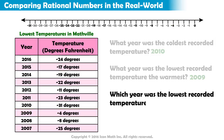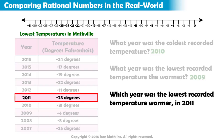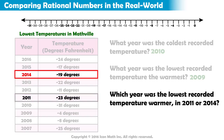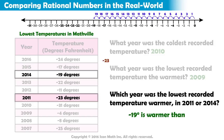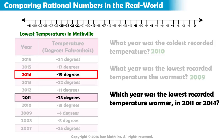Which year was the lowest recorded temperature warmer — in 2011 or 2014? In 2014, the temperature was negative 19 degrees. In 2011, the temperature was negative 23 degrees. Which number is closer to 0? Negative 19 is closer to 0 than negative 23, so negative 19 is warmer than negative 23. The temperature in 2014 was warmer than the temperature in 2011.